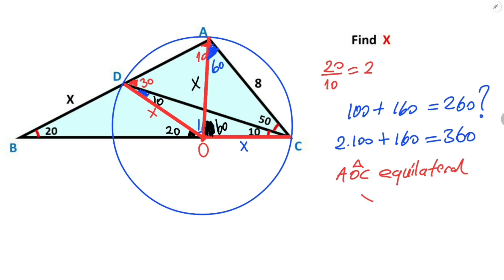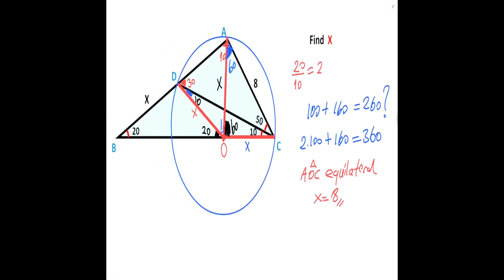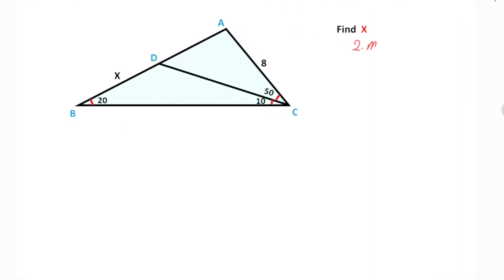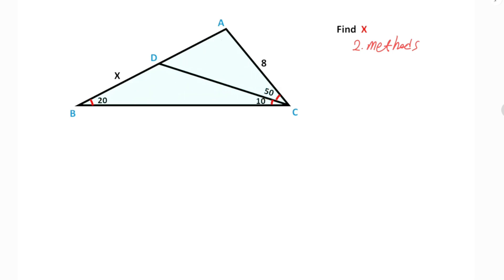Therefore x is going to be 8 units. That was the first method. Now we will calculate the value of x using the second method. We know that the sum of the interior angles equals 180 degrees, so angle BAC must be equal to 100 degrees. If you focus on this triangle, notice that here must be equal to 130 degrees, so that means this is an obtuse angle.